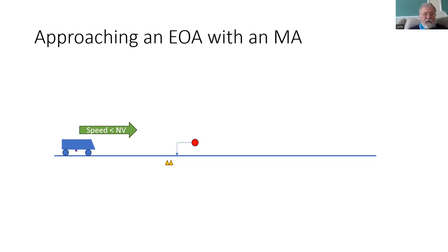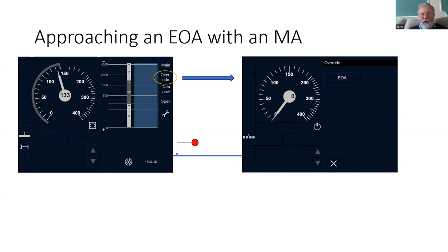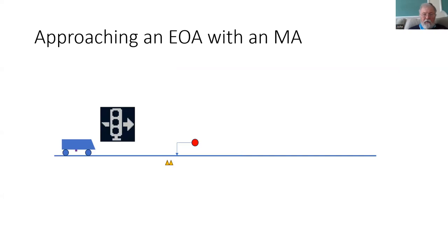Assuming that's the case, the driver can call up from the main menu the override option. That will operate and open the override window, and in there they have the option to select override EOA. If you're thinking about this from a driving point of view, it might be nice not to have to stop, but you've got to operate this menu which distracts you from looking out the window — potentially when you're going to be trying to stop at this location. However, having selected EOA to be overridden, the override icon will appear on the DMI and the DMI will return back to the normal menu.